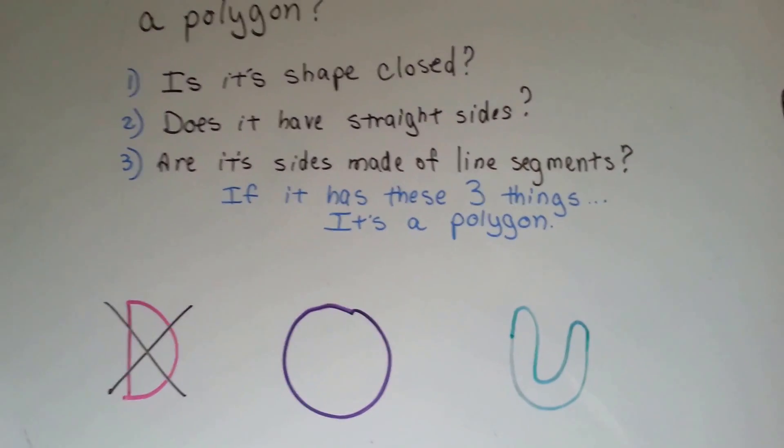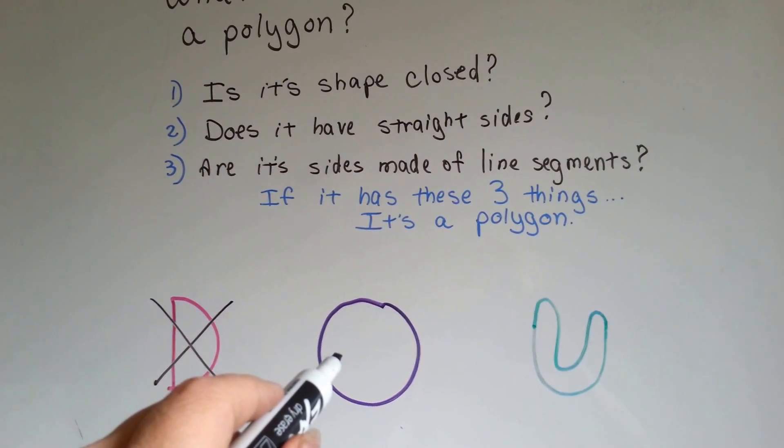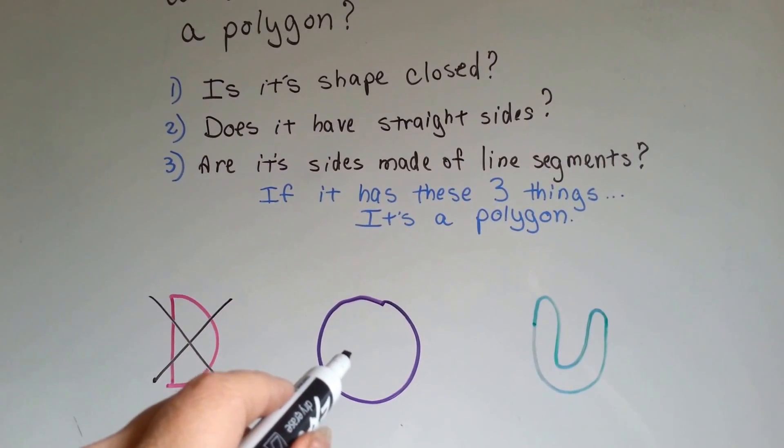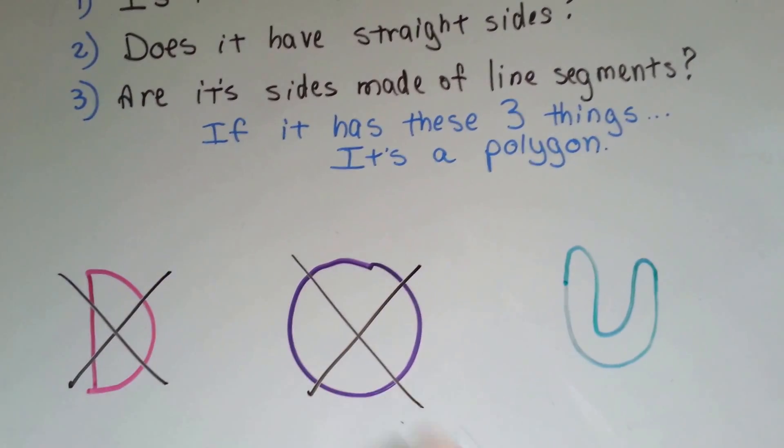Is this circle a polygon? Is its shape closed? Yes. Does it have straight sides? No. Are its sides made of line segments? No. That is not a polygon.